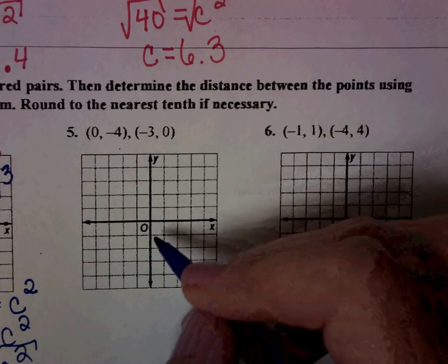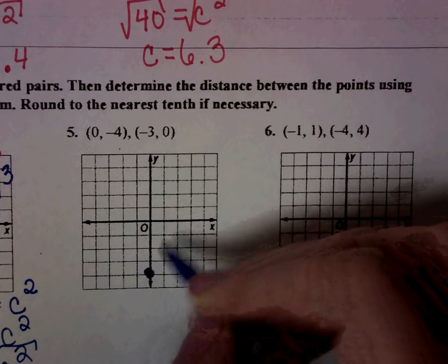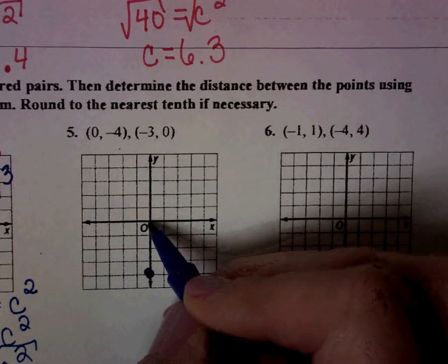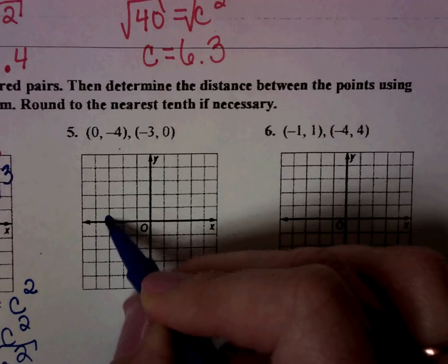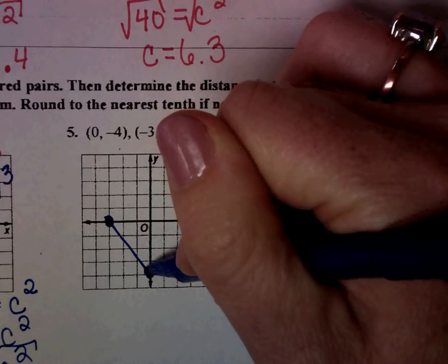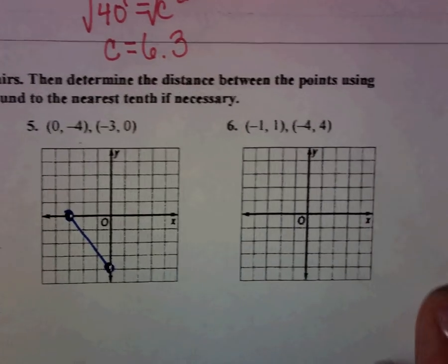For number 5, 0, negative 4 would be right here. Negative 3, 0. I'm going to go negative 3 and then 0, so not up or down. The line I'm trying to find the length of is right here. And so now I want you to try to do your right triangle and check and test it.